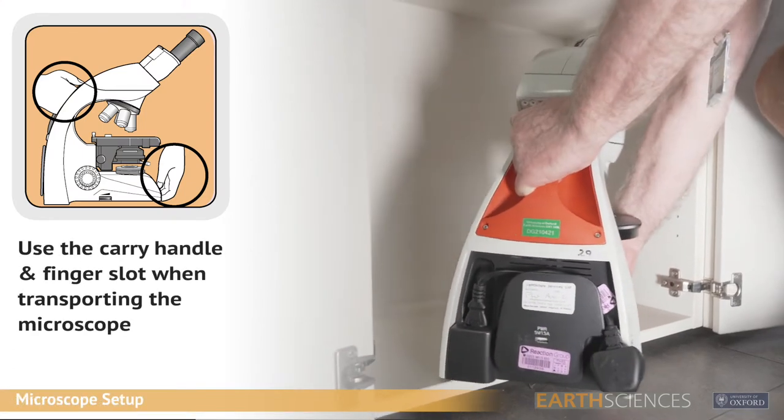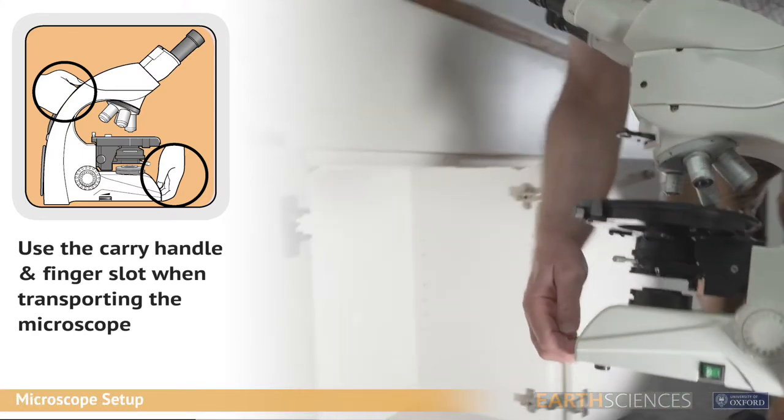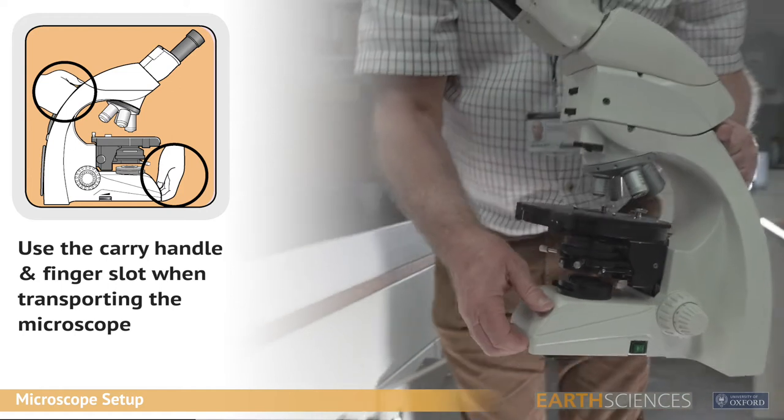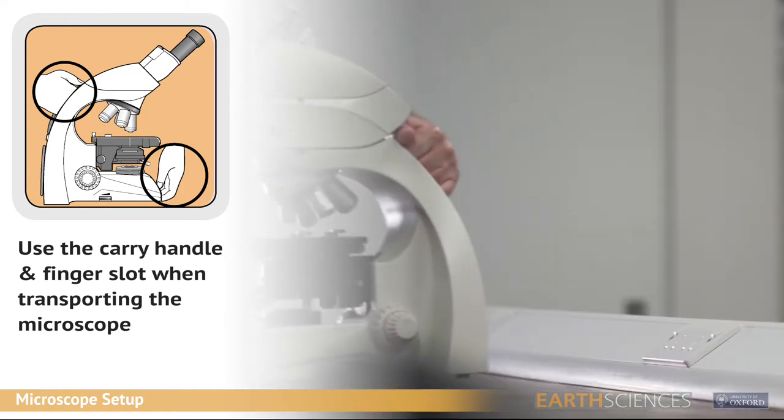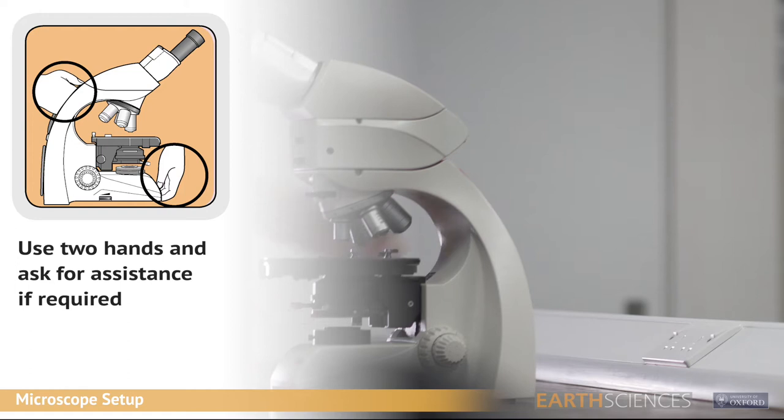At the back of the microscope stand is the orange instrument carry handle. This must be used in conjunction with the finger slot at the base of the front of the microscope when moving the microscope. Always use two hands when transporting or moving the microscope onto the desk for use.